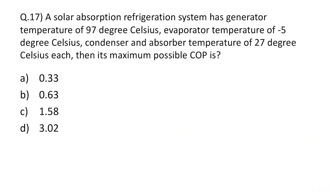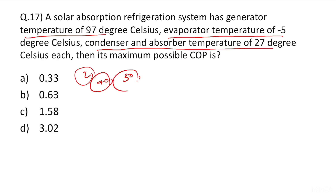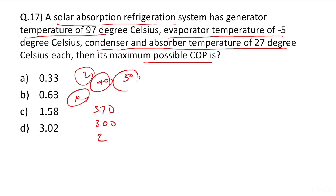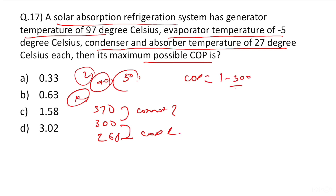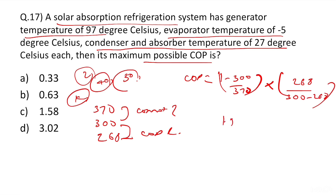Question 17 looks like a 2-minute question but I will show you how to do it in 30–40 seconds. It is a solar absorption refrigeration system where generator temperature, evaporator temperature, condenser temperature are given — find the COP. For solar absorption refrigeration, arrange temperatures in decreasing order: 370 K (97°C), 327°C, and 268 K (−5°C). Apply Carnot efficiency and COP of refrigeration: COP = [1 − (300/370)] × [268/(300 − 268)]. Solving gives 1.584, so the correct answer is C.